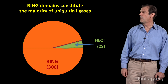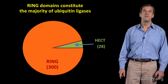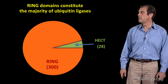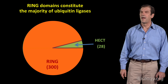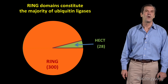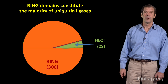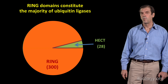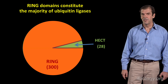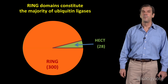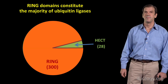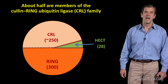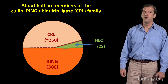I touched on these briefly in part one, but just to reorient: there are two different domains that comprise the vast majority of ubiquitin ligases encoded in the human genome, known as the HECT domain and the RING domain. There are about 300 RING domain genes and about 28 HECT domain genes. Two of those RING domain proteins, RBX1 and RBX2, can be used in a combinatorial fashion to assemble roughly 250 additional ubiquitin ligase enzymes known as cullin ring ubiquitin ligases, giving a total of roughly 600 different ubiquitin ligases that a human cell can express.